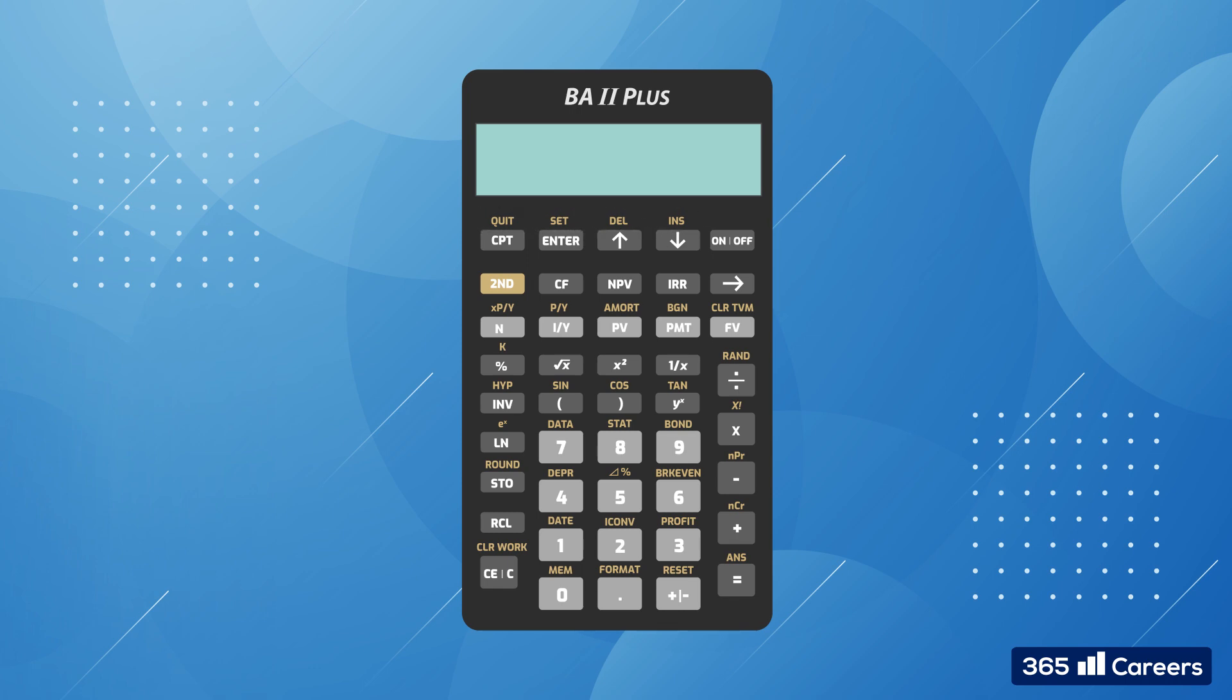For example, across the top row, we can see that the printed functions are quit, set, delete, and insert. However, you don't need to worry if you don't know what they all do. The Texas Instruments BA2 Plus comes preloaded with hundreds of functions. Fortunately, we only need to use a few of them.